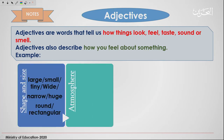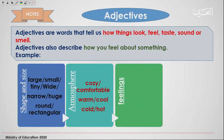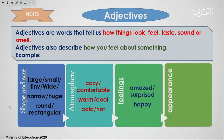There are many other words that could be used. For the atmosphere, we say: cozy, comfortable, warm, cool, cold, hot. For feelings: amazed, surprised, happy, excited, and so on. For appearance: colorful, beautiful, unforgettable, unattractive.